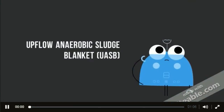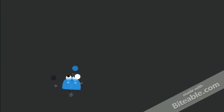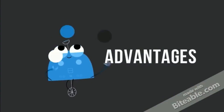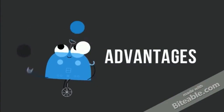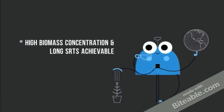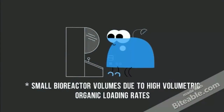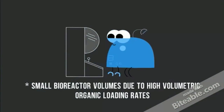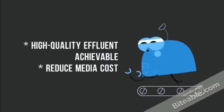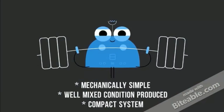Upflow anaerobic sludge blanket (UASB) advantages and disadvantages. UASB advantages: firstly, high biomass concentration and long SRTs achievable; small bioreactor volumes due to high volumetric organic loading rates; high quality effluent achievable and reduced media cost; mechanically simple; well-mixed conditions produced; and compact system.